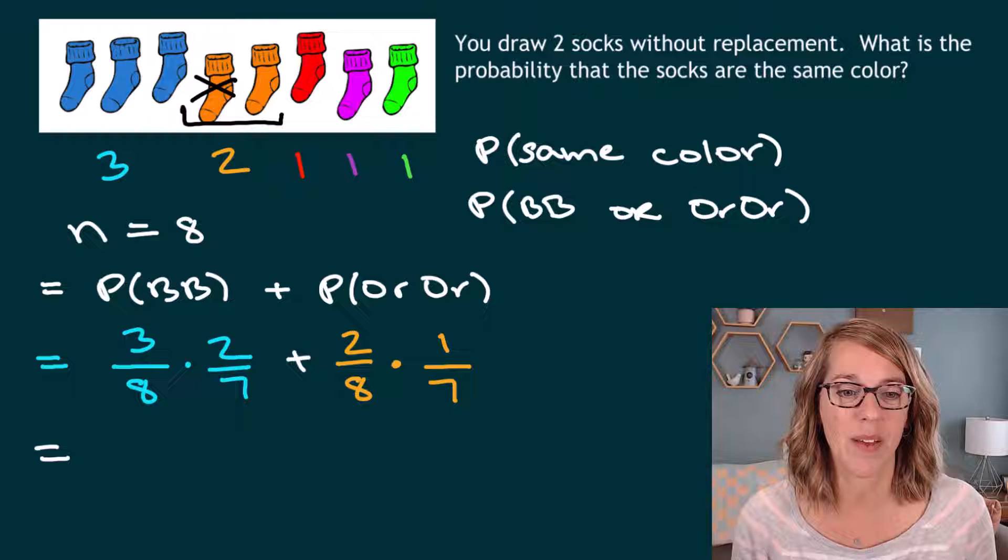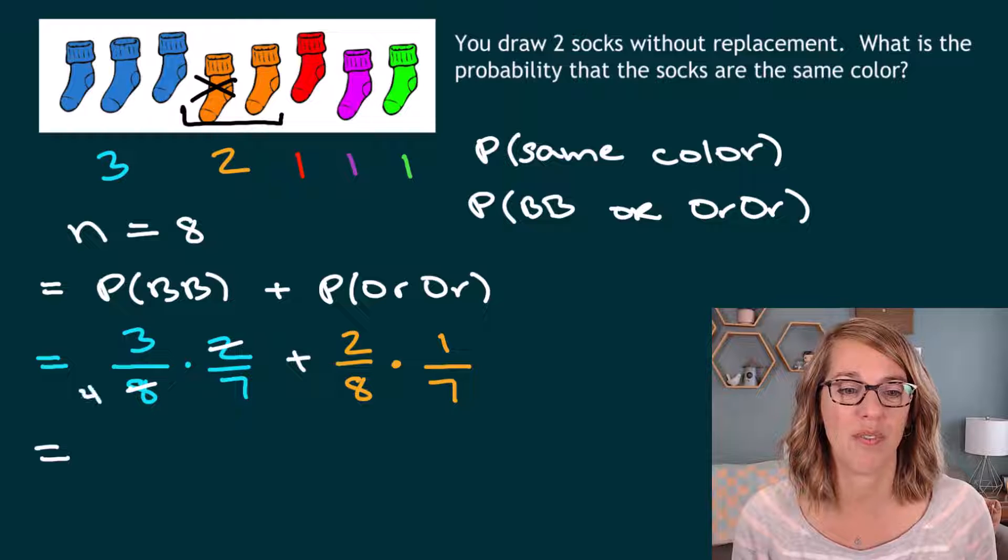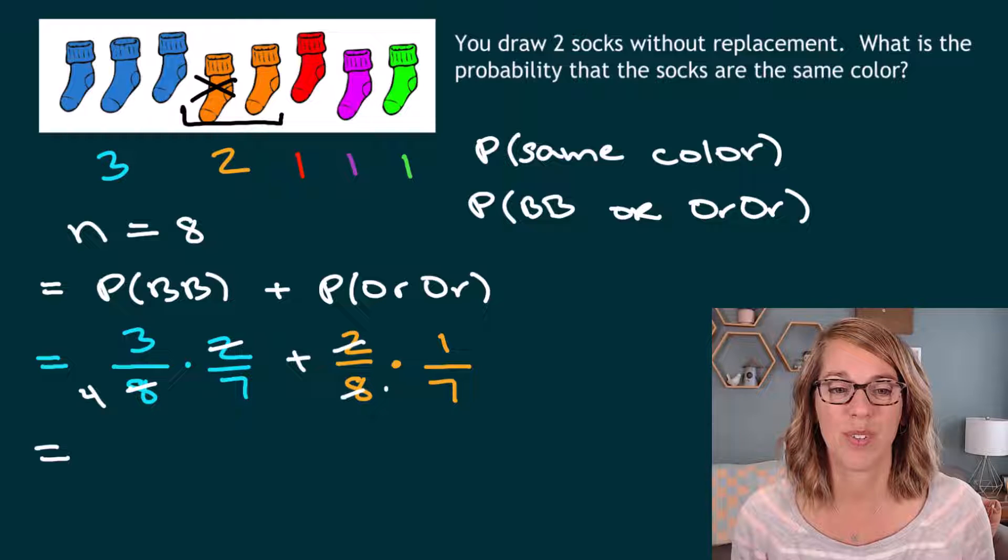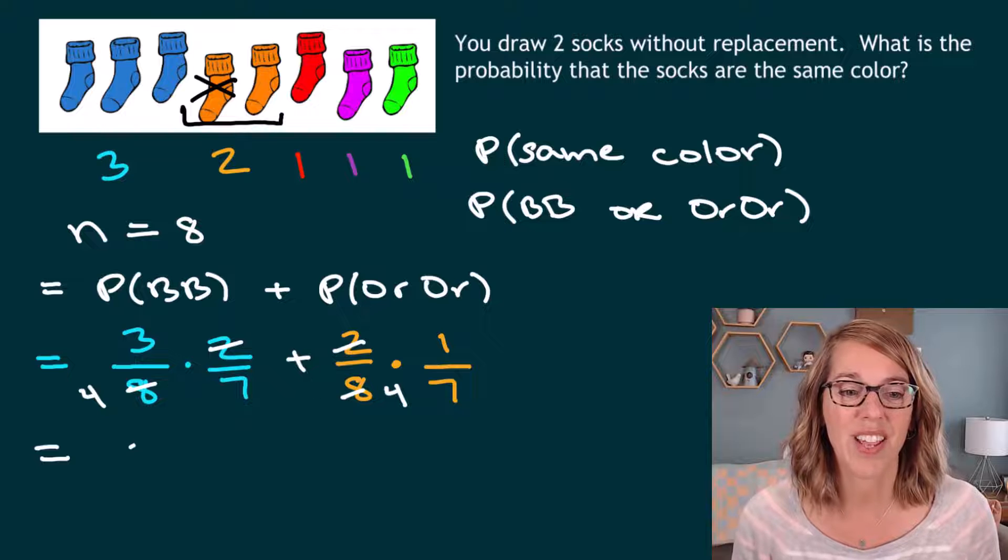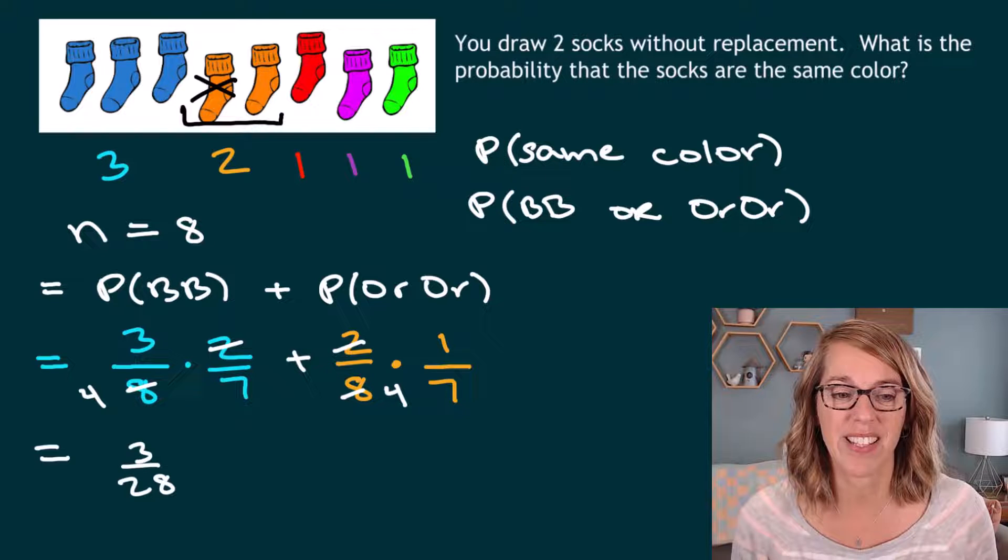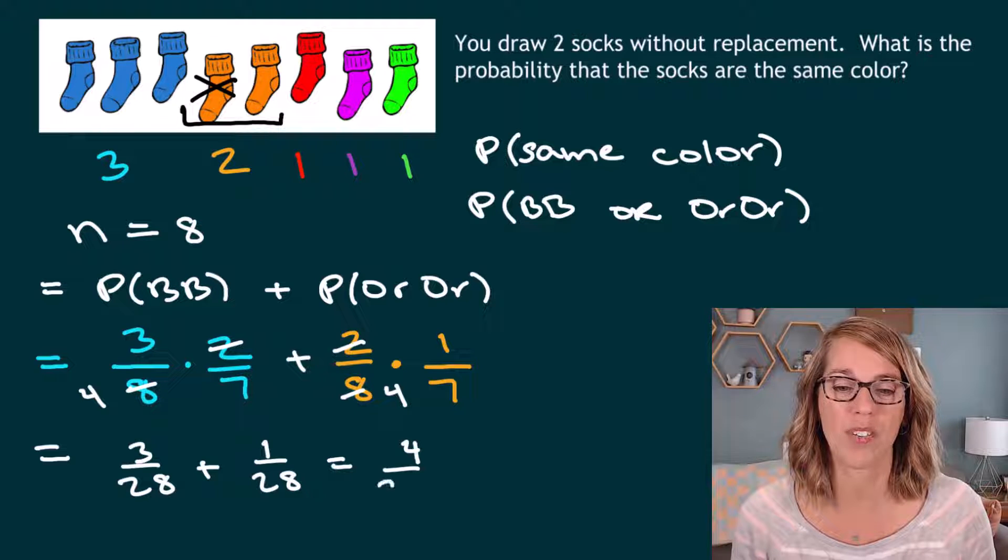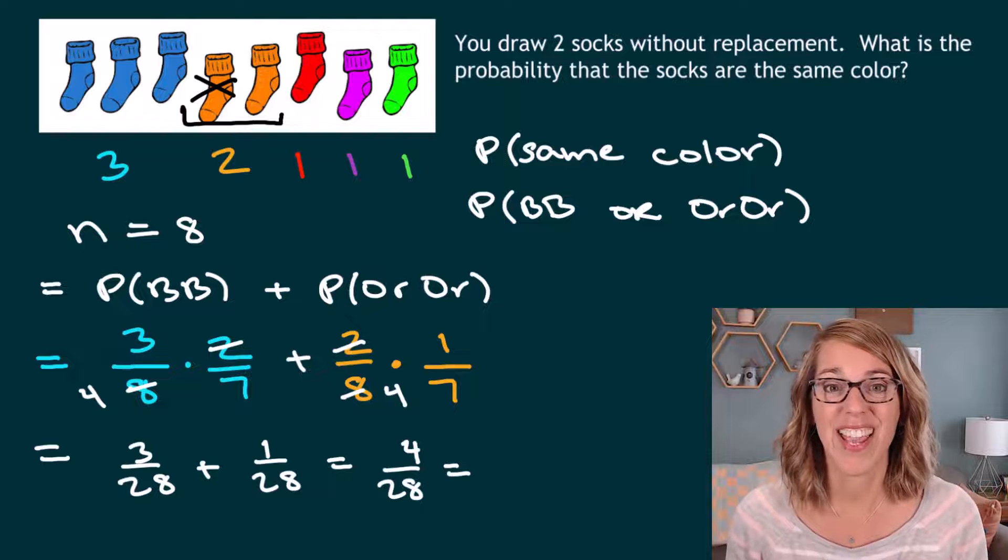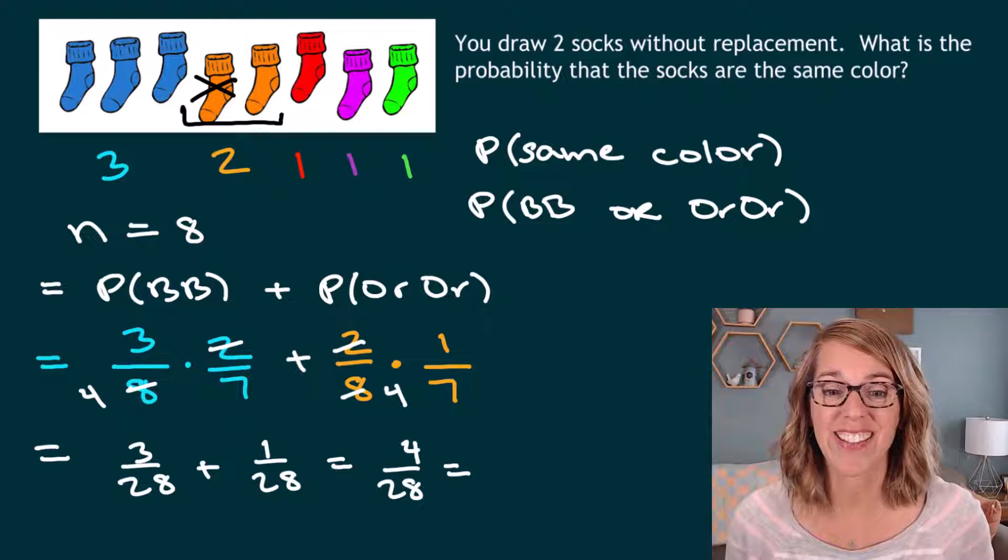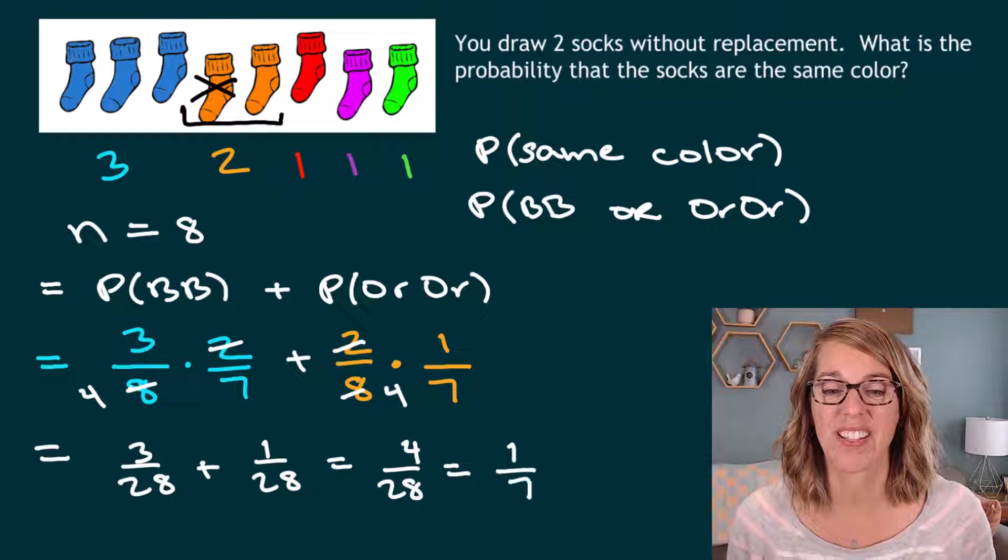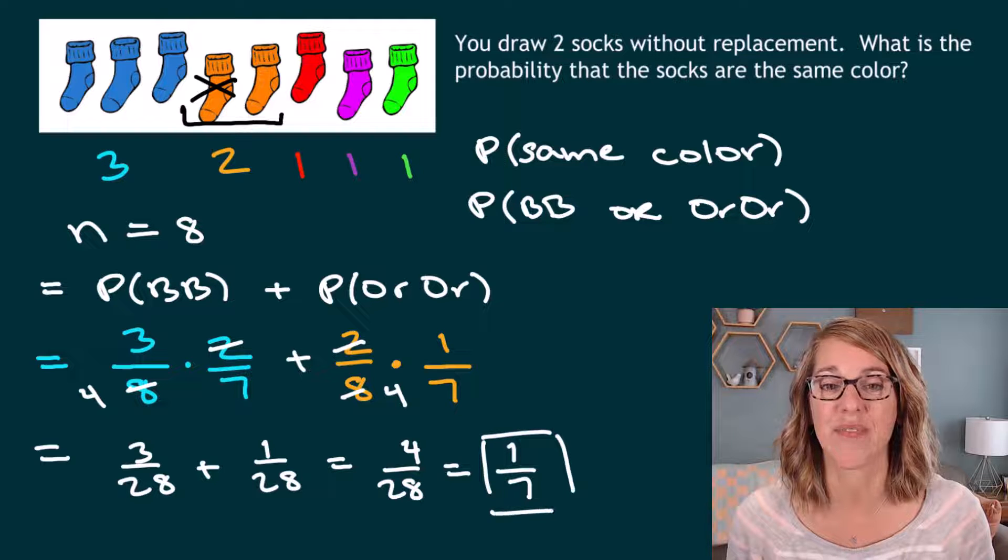Now I can do a little bit of math and clean this up, cancel the twos, and I get a four here, cancel some twos, and I get a four here. So I end up with three twenty-eighths plus one twenty-eighth. And that is equal to four twenty-eighths. I can cancel a four out of both the numerator and the denominator. And I end up with one seventh expressed as a fraction.